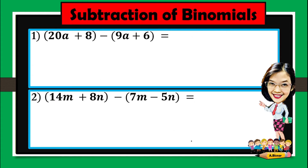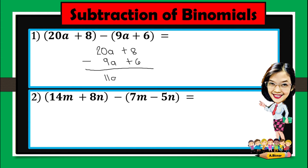Let us now subtract binomials, and let's subtract vertically. Number 1: 20a plus 8 minus 9a plus 6. So 20 minus 9 is 11a, and 8 minus 6 is 2. The answer is 11a plus 2.